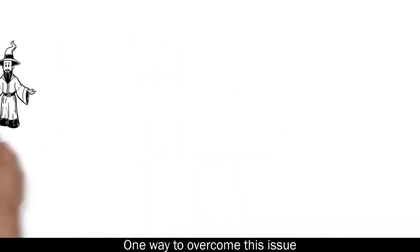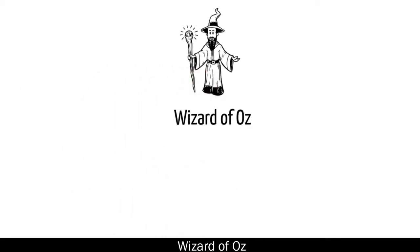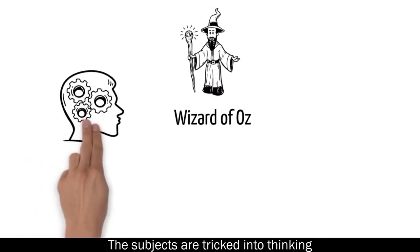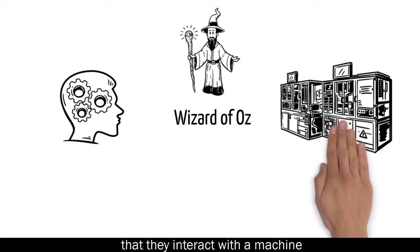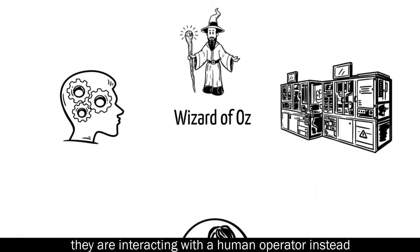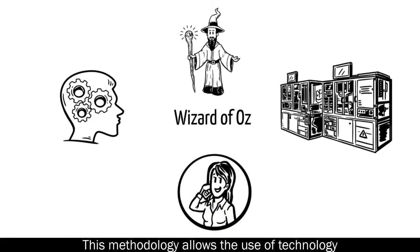One way to overcome this issue is to use the well-established Wizard of Oz method to evaluate and adapt existing, unfinished systems. The subjects are tricked into thinking that they interact with the machine, but in reality, they are interacting with the human operator instead. This methodology allows the use of technology as a rapid prototype that would be too costly to implement or is generally not available yet.